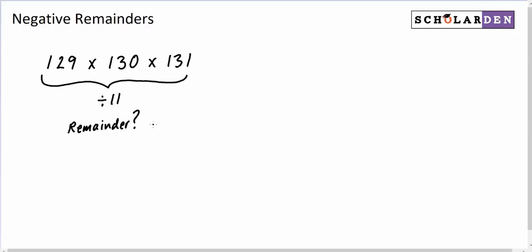Let's first do this where we find the positive remainder, and then let's look how doing it with negative remainders actually makes things easier. Now, we can see that these three numbers are going up by 1 each time, and that's going to be significant.